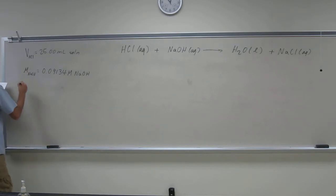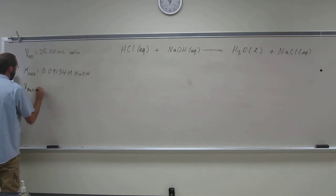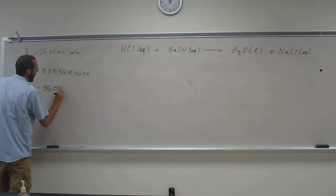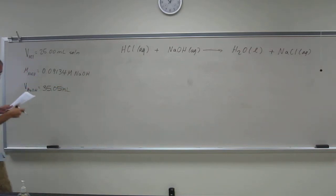And it gives us the volume of sodium hydroxide used, volume of NaOH equals 35.05 mils. What's the molarity of HCl?